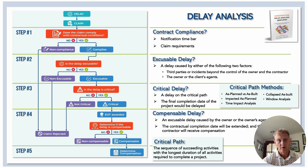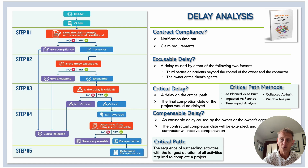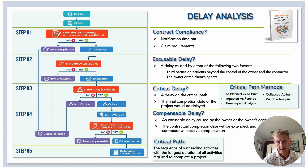If we establish that the project was indeed delayed, we move on to step four — determining whether the delay is compensable. The contract would give guidance, but generally in the industry, excusable delay caused by the owner or the owner's agents would qualify for compensation. In this case, in addition to compensation, the contract completion time would be extended, and the final step would be to determine the specific compensation — again guided by the contract or billing documents.